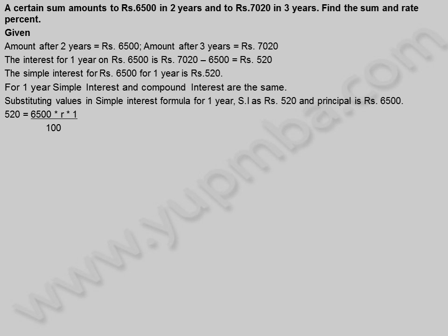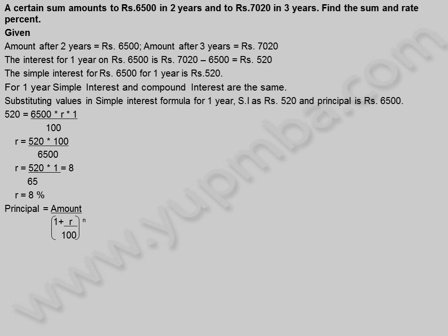So 520 = 6,500 × r × 1 / 100. Rate = 520 × 100 / 6,500 = 520 / 65 = 8. Rate is equal to 8%. Principal = Amount / (1 + r/100)^n. Substituting values in the formula corresponding for three years.